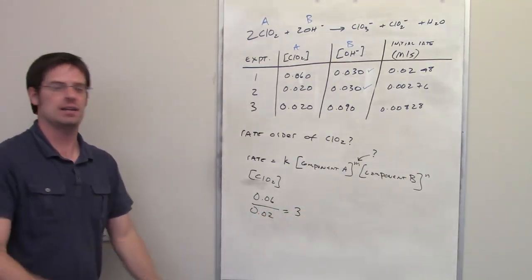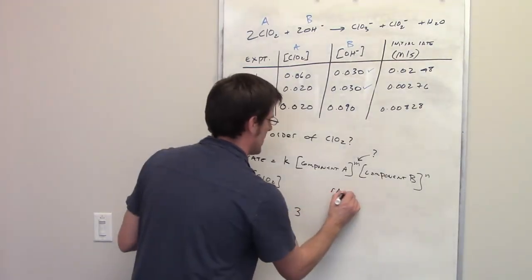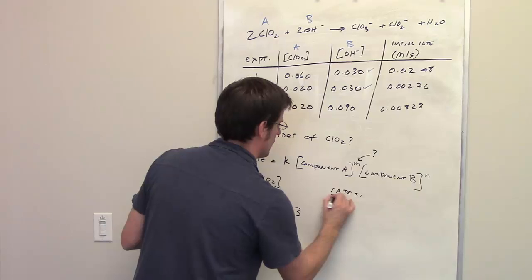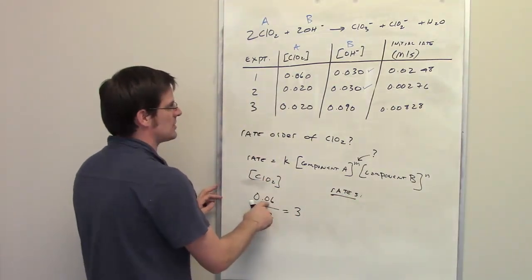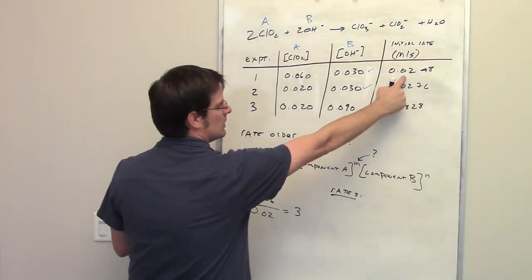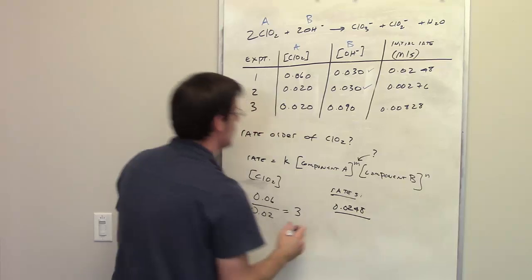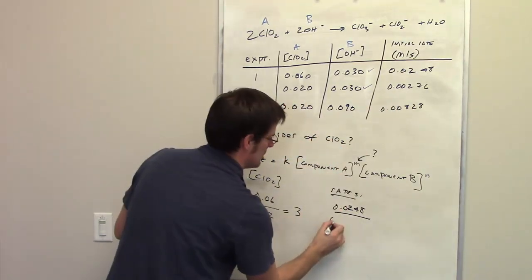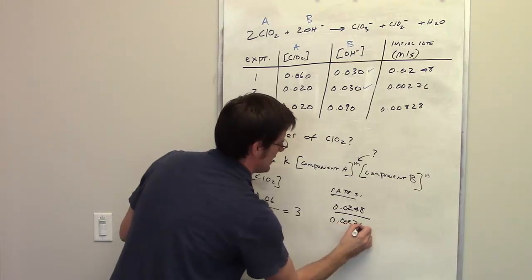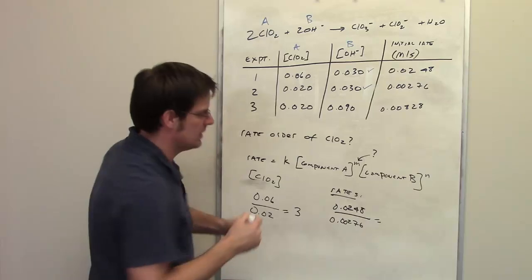But how was the rate affected when I made that change? So I'm going to write my rates out. When the concentration was 0.06, the rate was 0.0248. When the concentration was changed to 0.02, the rate went to 0.00276. If I divide the big one by the small one, I end up getting 9.